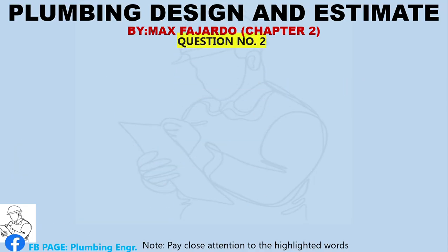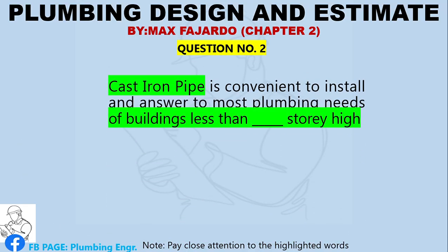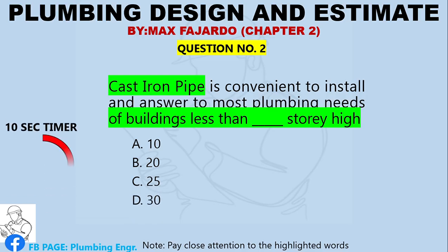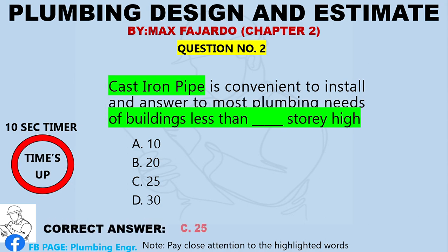Question Number 2. Cast iron pipe is convenient to install in answer to most plumbing needs of buildings less than blank story high. A. 10. B. 20. C. 25. D. 30. Correct answer: Letter C, 25.